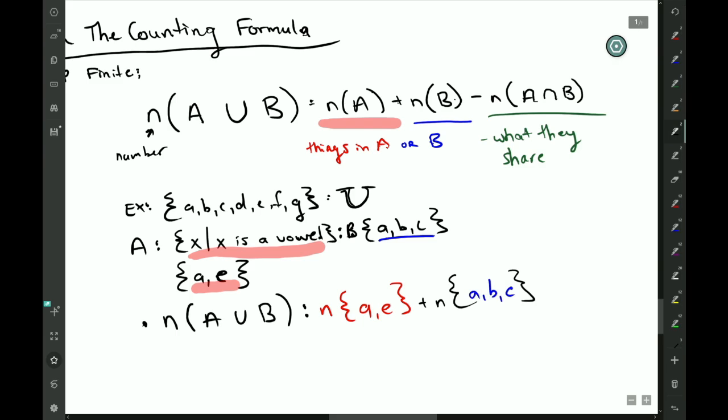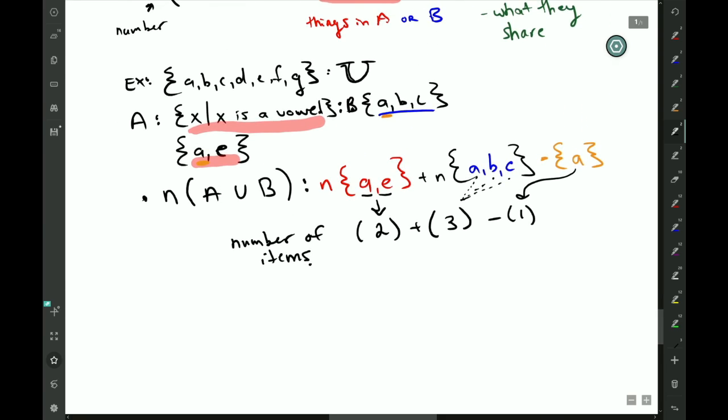But notice I have 'a' in both of them, so that's why I need to subtract the intersection. So total number-wise, because again that's what we are concerned with—the number of items—I have two items, so a and e are two things, plus three things minus one thing.